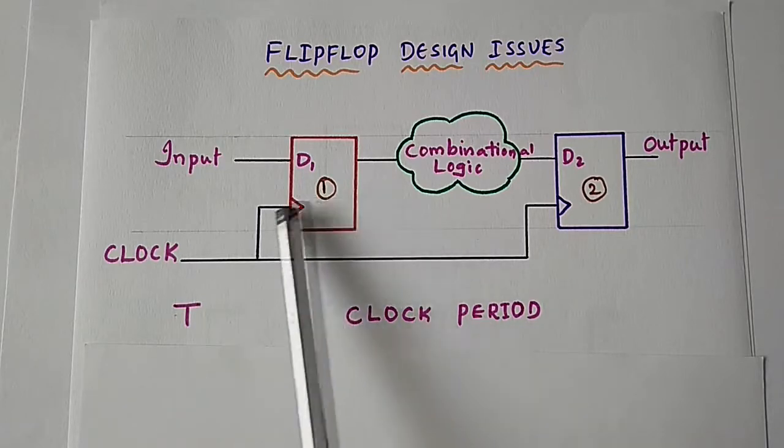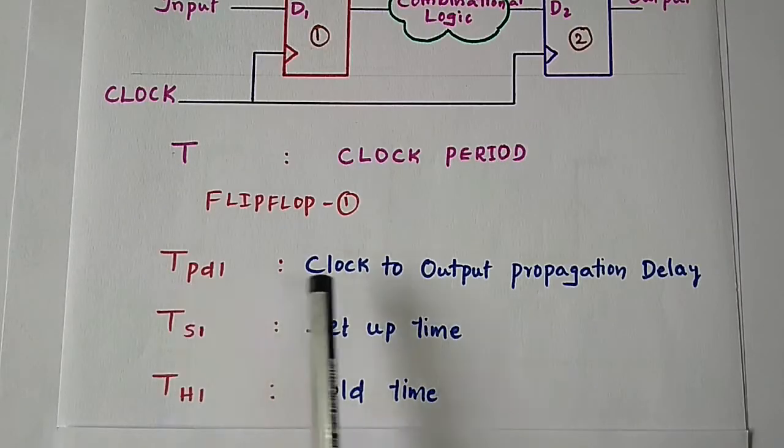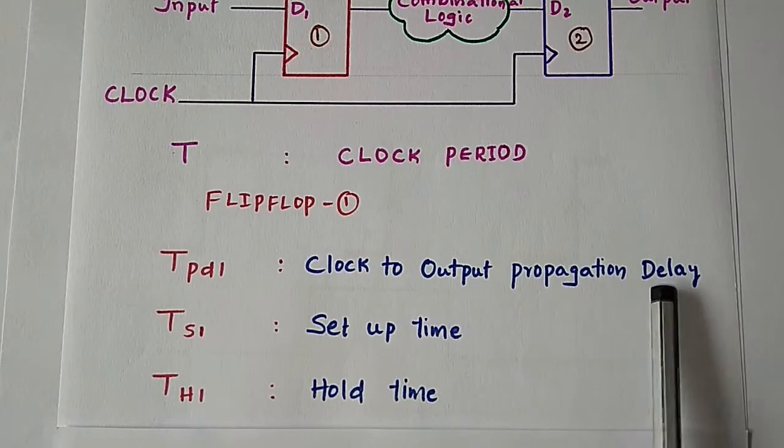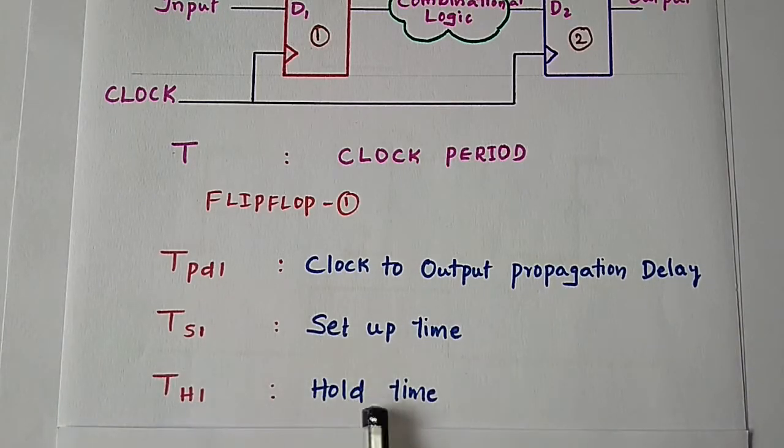Let us assume that for flip-flop 1, we have tpd1 is the clock to output propagation delay, ts1 is setup time and th1 is hold time.